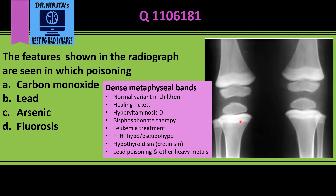In lead poisoning, the lead deposits in the provisional zone of calcification and stops the functioning of osteoclasts. The osteoblasts are still functioning, leading to increased osteoid deposition, which gives these white lines. So the answer is lead poisoning.